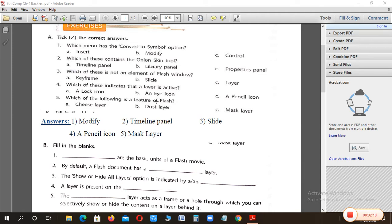Which of the following is the feature of flash? Cheese layer, dust layer and mask layer. We have not read about cheese and dust. We have read mask layer. So mask layer is the feature of flash.